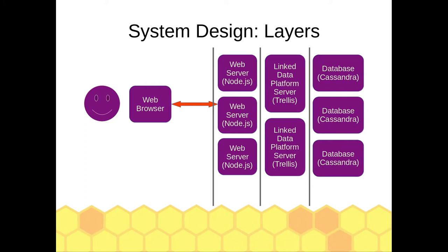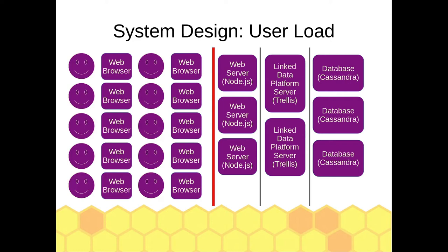Each of those servers on the right really occupy a layer within the application, and each of those layers can be scaled up. You can have multiples of each of those servers. Whenever one of the layers starts to slow down because it's being used by a lot of users, you can add more servers to that layer and reduce the load on each server, making sure your performance stays level and that your capacity stays level — in the case of the database — for storage. So that lets you handle a lot more users.